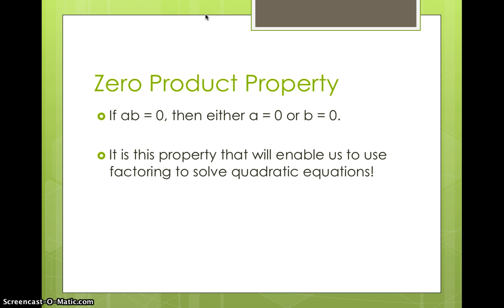First thing I want to talk about is this thing called the zero product property. This is what actually makes sense with solving by factoring and enables us to do what we're about to do. Here's what it says: If a times b equals zero, then either a has to be zero or b has to be zero. That's an obvious property we take for granted, but think about it. If you have two numbers that multiply to zero, one of those numbers had to have been zero. You can't get two numbers that are not zero to multiply together to get zero. That's important because that's what's going to enable us to use the factors of a quadratic expression to solve equations.